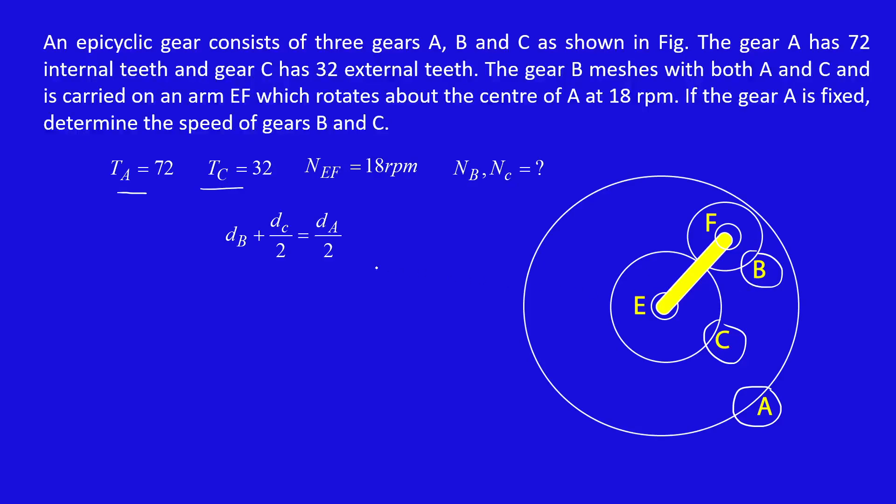DB is the diameter of gear B. Then TC by 2 is the radius of gear C, and this is the radius of gear A. If you take gear A, this is the radius of gear A. So diameter of gear B plus radius of gear C equal to radius of gear A. This is the relation.